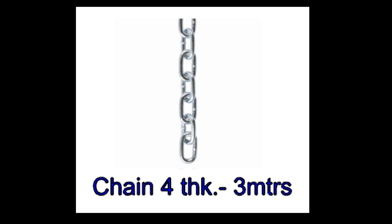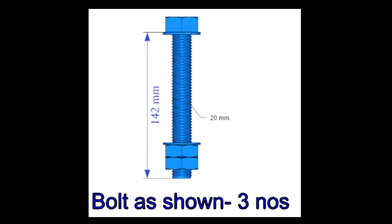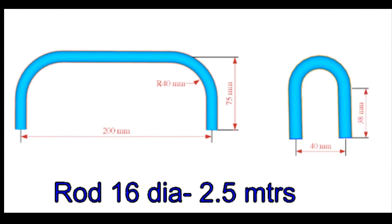3mm thick chain, 3 meters. 20mm diameter bolts, 3 numbers as shown. 16mm diameter rod for 6 numbers handles and 3 numbers hooks.